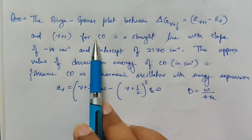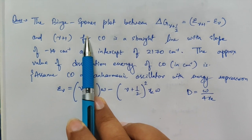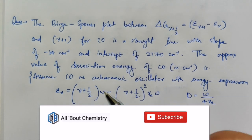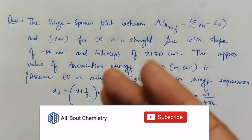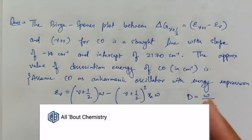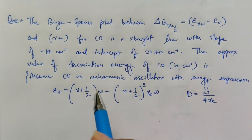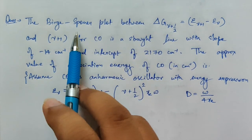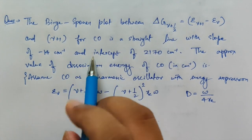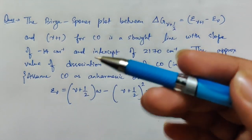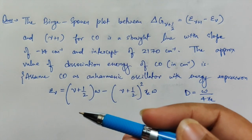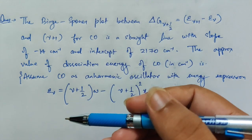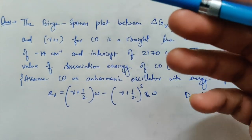This video is about a question which was asked in the CSIR June 2019 exam. In this particular question it was asked from the Birge-Sponer plot, or the Birge-Sponer method. This method is used to calculate dissociation energy. In this method, using vibrational spectroscopy, we try to find out the energy difference between the initial state and the highest V-value state, which is called the unbound state.